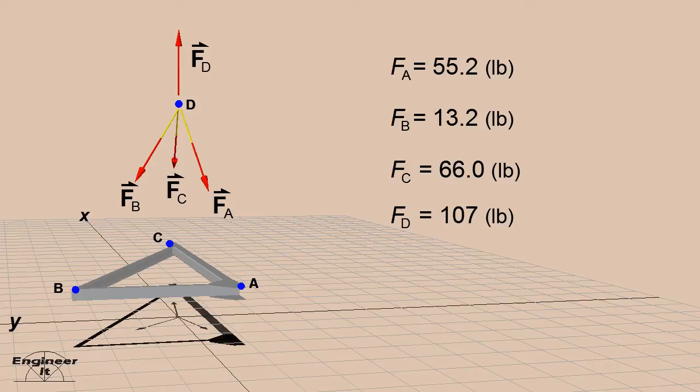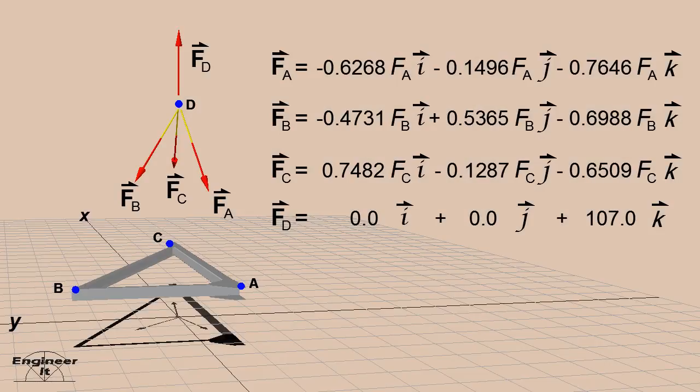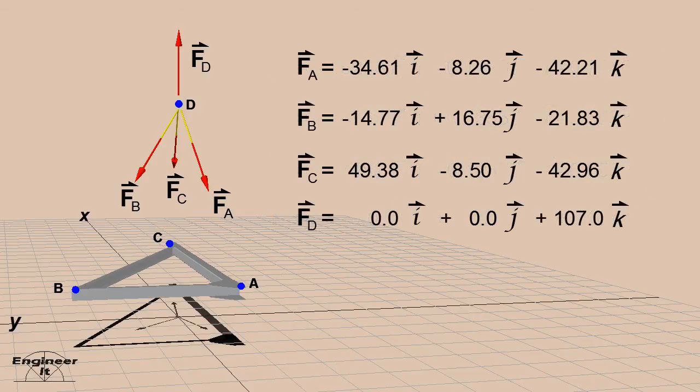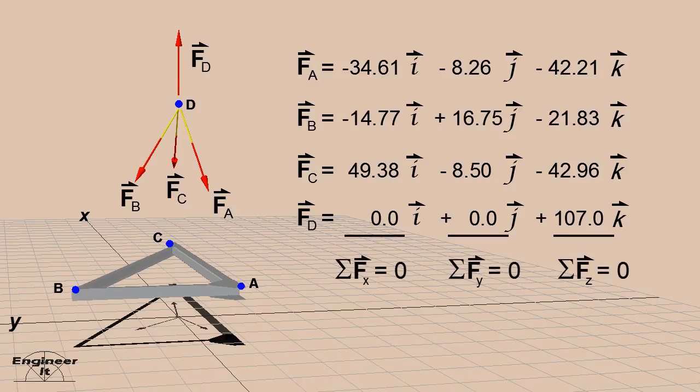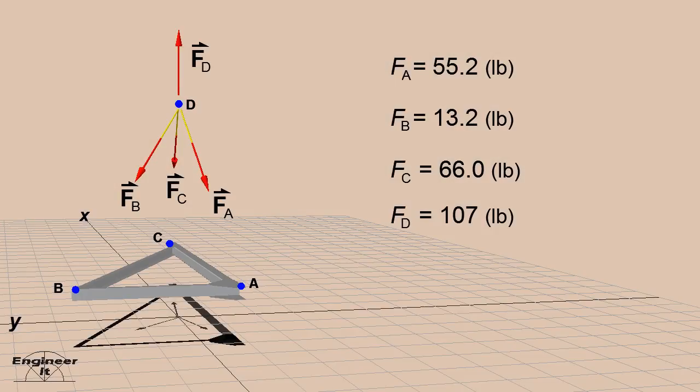These are the magnitudes of the tensions in each rope. But let's verify that these are correct by substituting these values back into the vector equations. Check for equilibrium. So these are correct.